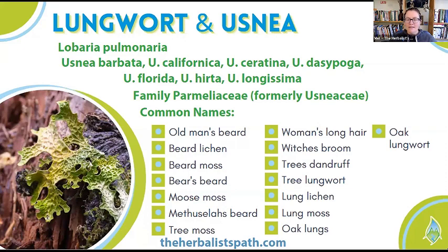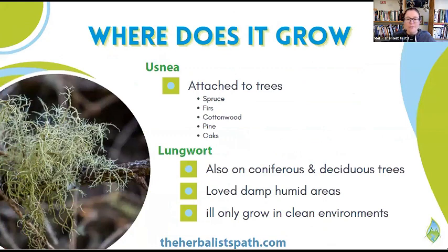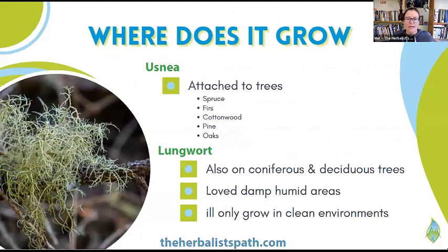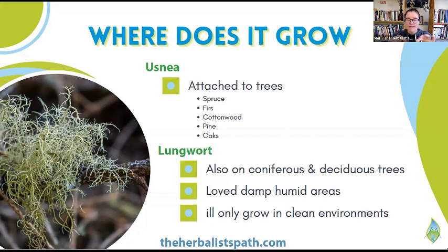I would be very surprised if these don't pop up somewhere in the forest near you. Usnea is a very slow growing lichen. It's got branching round strands with a grayish green to yellowish green outer part, and in the middle it's kind of like a corded elastic kind of thing — white, and it's really interesting to see when you're out in the wild. That's a great way to know that you actually have usnea.